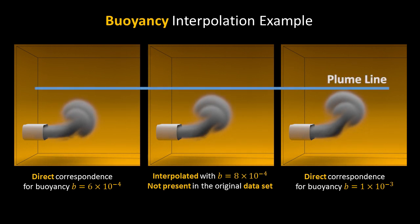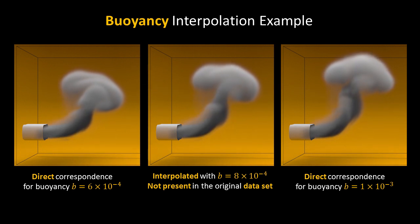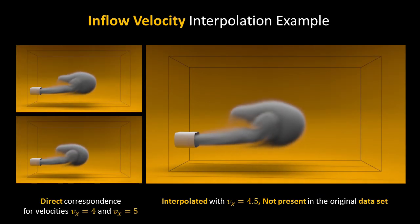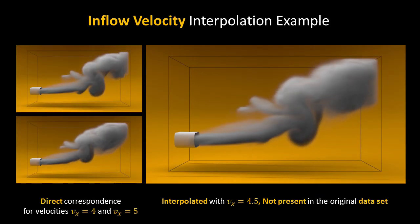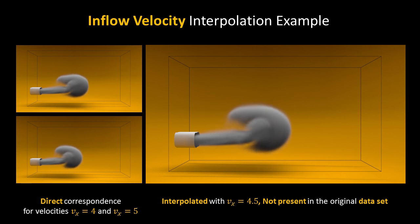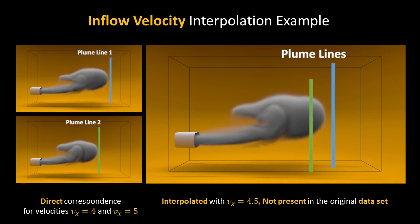A plume line denotes the height of the simulation with the highest buoyancy. In this similar example, a horizontally traveling smoke is interpolated for the inflow velocity equal to 4.5. The plume lines help to visualize the relative position of the interpolated inflow to the original samples.